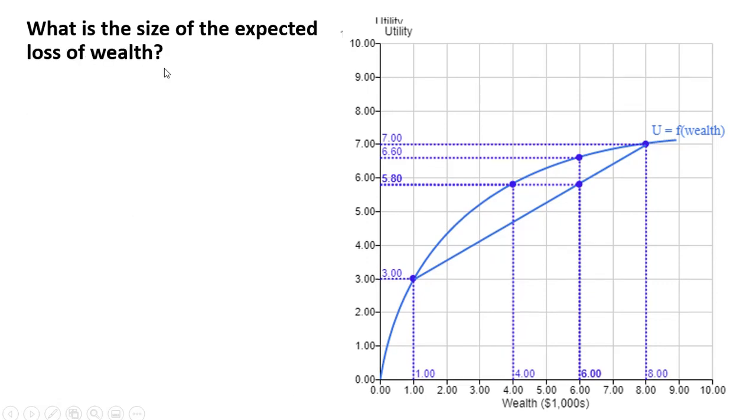What is the size of the expected loss of wealth? It's just going to be 8 minus 6, so if you're healthy, you have 8, but the expected value here of wealth is 6, so the answer here is 8 minus 6, or $2.